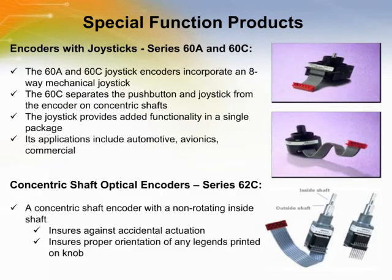Greyhill has also developed several encoders with special features for various applications. The 60A and 60C joystick encoders incorporate an eight-way mechanical joystick, allowing the customer to incorporate additional functionality into their product without using additional panel space. The 60C separates the push button and joystick from the encoder on the concentric shafts. Applications include automotive climate controls and rear seat entertainment systems, avionic information management systems, and oven temperature and humidity controls.